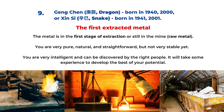The ninth type is the Geng Chen year and the Xin Si year, for birth years 1940, 1941, 2000, and 2001. It's called the first extracted metal — the metal element. This represents the first stage of extraction of metal, or the raw metal still in the mine. You are very pure, natural, and straightforward, but not very stable or mature yet. You are a very intelligent person, and if you can be discovered by or work with the right people, you can gain experience and develop the best of your potential.